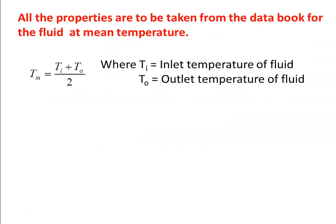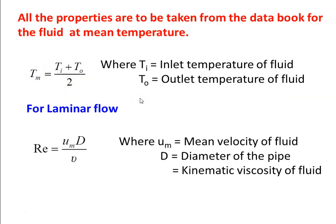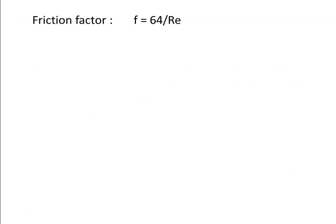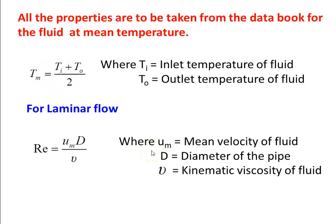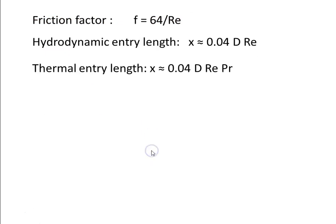For internal flow convection heat transfer, all fluid properties are taken at the mean temperature, where mean temperature T_m equals fluid inlet temperature T_i plus fluid outlet temperature T_o divided by 2. For laminar flow, Reynolds number equals U_m times d divided by nu, where d is the pipe diameter, nu is kinematic viscosity, and U_m is mean velocity. When Reynolds number is less than 2300, the flow is laminar. Friction factor f equals 64 divided by Reynolds number. Hydrodynamic entry length x equals 0.04 times diameter times Reynolds number. Thermal entry length x equals 0.04 times diameter times Reynolds number times Prandtl number.